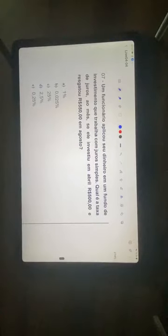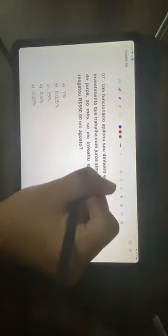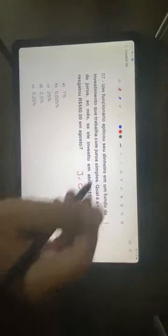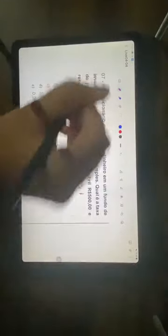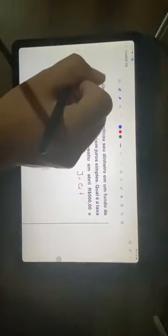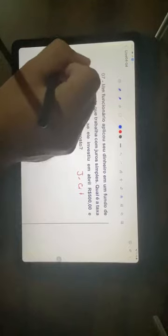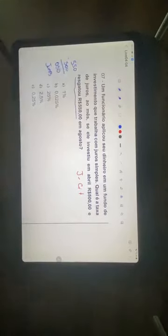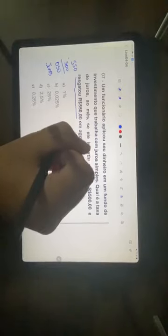Question 7. A funcionário applied his money in an investment fund that works with simple interest. What's the interest rate, that is, what's the value of I per month if he invested in April R$500 and rescued R$550 in August? To remember, our formula is J equals CIT. If he rescued R$550 and had applied R$500, then R$550 minus R$500, R$50 of interest. So juros equals R$50.